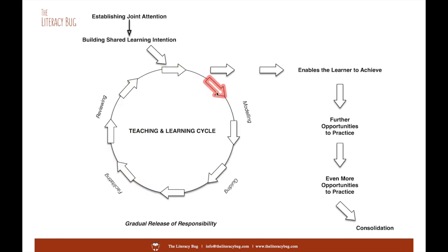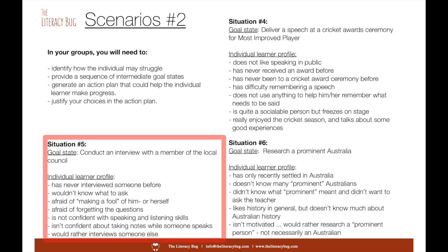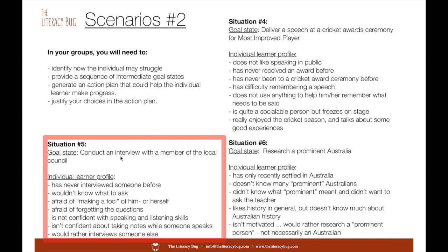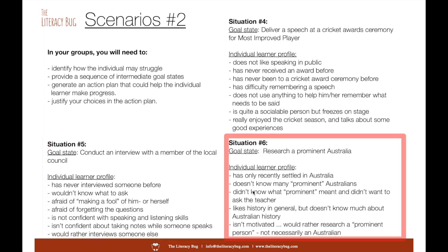For example, in essay writing: becoming a master of writing essay introductions, then once that's consolidated moving on to body paragraphs, until at the end of a number of cycles the individual understands the various components — introducing, arguing, and concluding. Other scenarios to reflect upon include delivering a speech, conducting an interview, and researching a prominent Australian — looking at a particular profile and thinking about what you would do to help that learner become an effective and thorough researcher, and how you would scaffold so that what is implied in the task becomes more explicit.